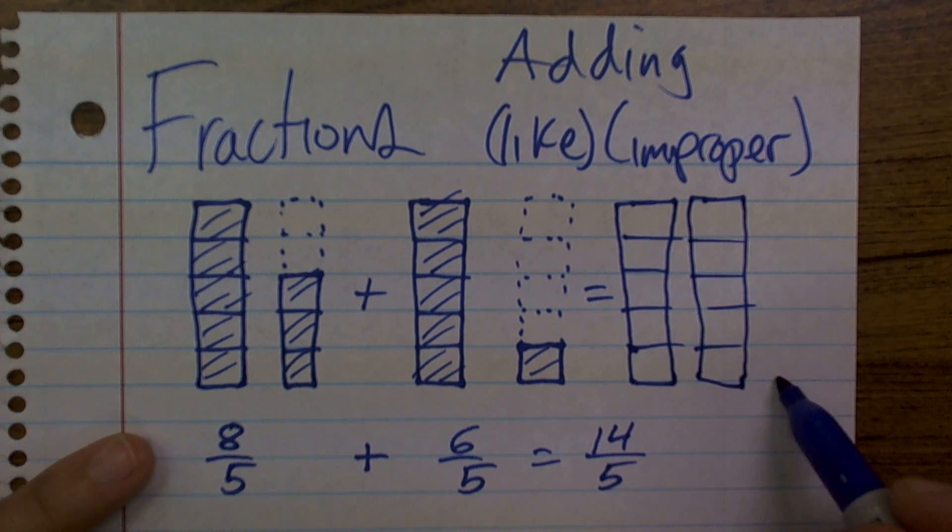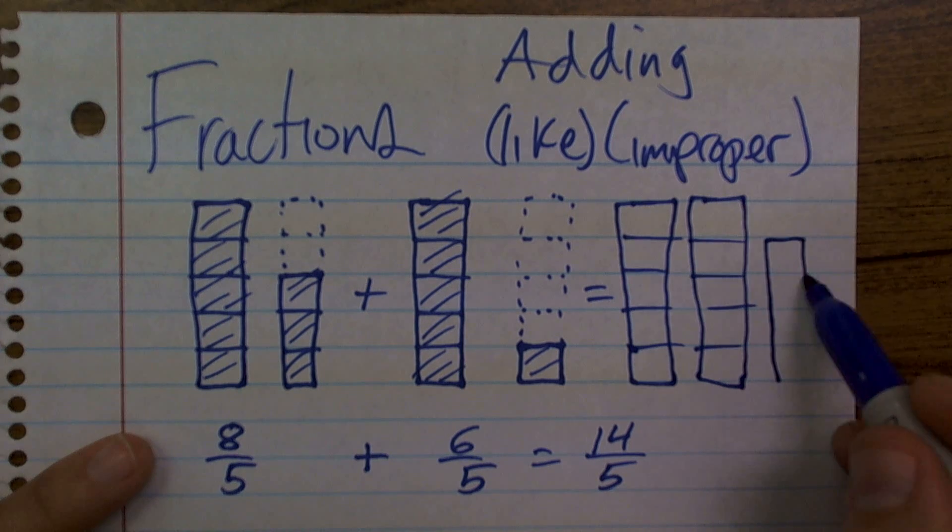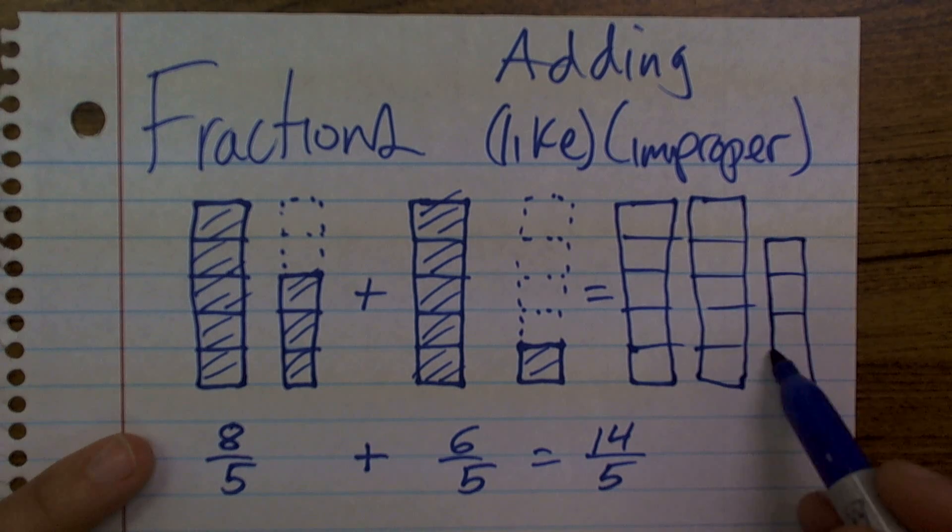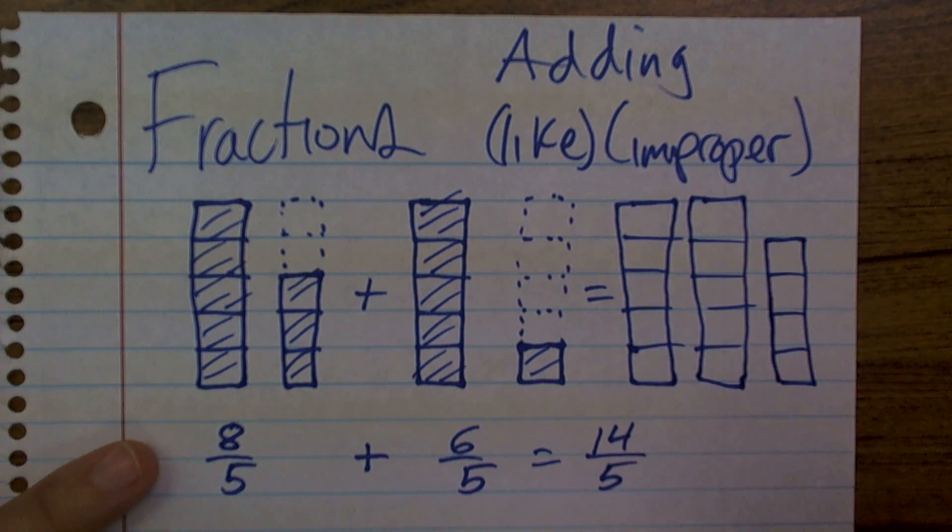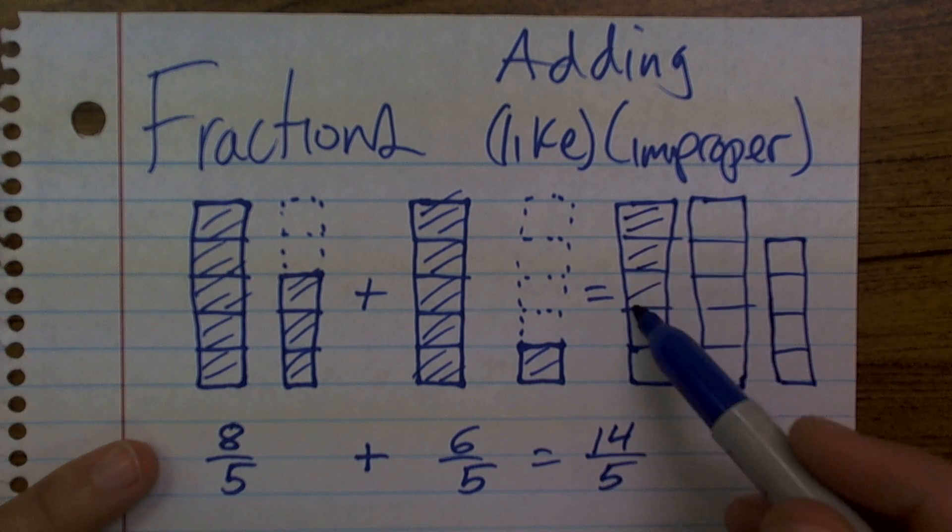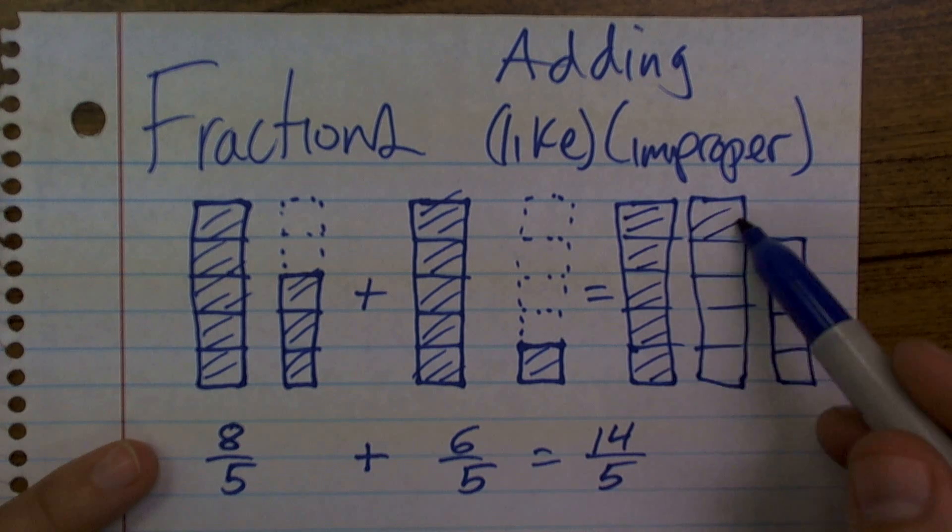Then there's going to be four more parts: one, two, three, four. You can see how my answer is represented. If I've added up all these parts, that gives me a total of 14, which I've represented here. I'm just going to leave my answer as an improper fraction.